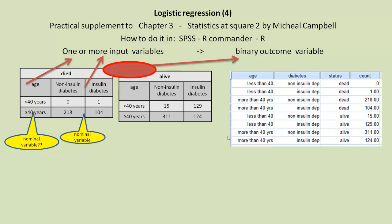How do we enter this data into SPSS? Well, this is how we do it. We have four columns: the first column is the age variable, the second column is the diabetes variable, the third one is status for alive or dead, and the last column is the number for that cell.